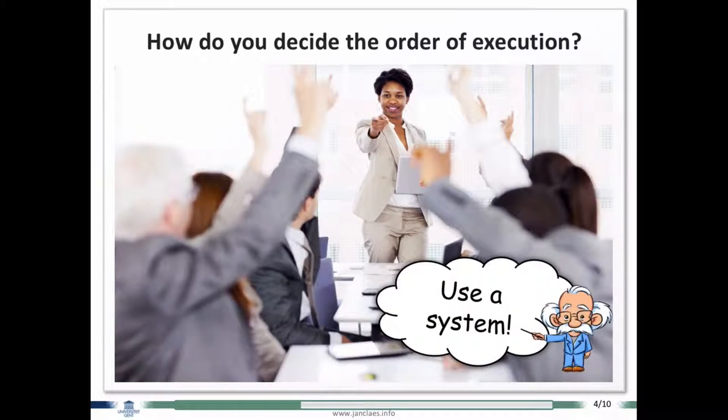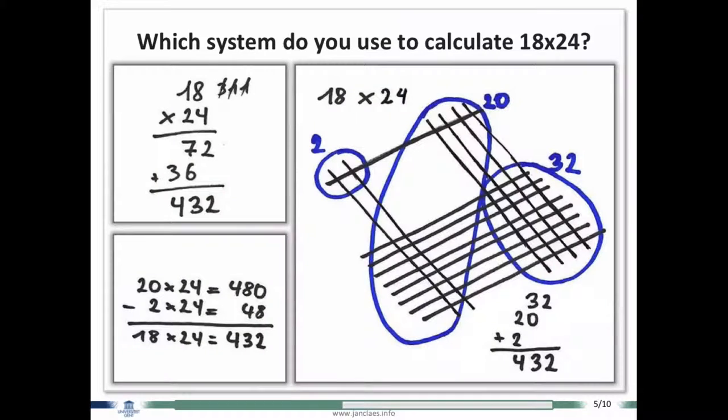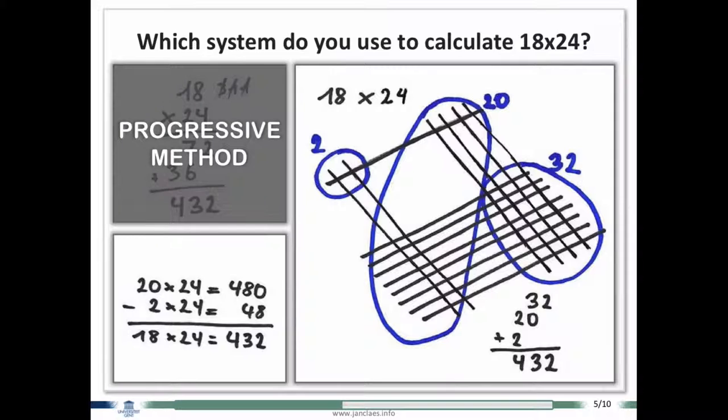The next thing is there are a lot of systems to solve problems. For example, when you have to calculate a certain multiplication. In Europe or in Belgium we learned the top left one, which is a progressive method for calculating multiplication.